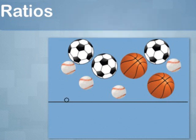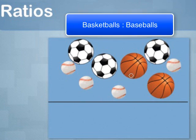Now let's look at the ratio of basketballs to baseballs. There are two basketballs and four baseballs. So you can write the ratio these ways: two to four, two-fourths, or two to four.